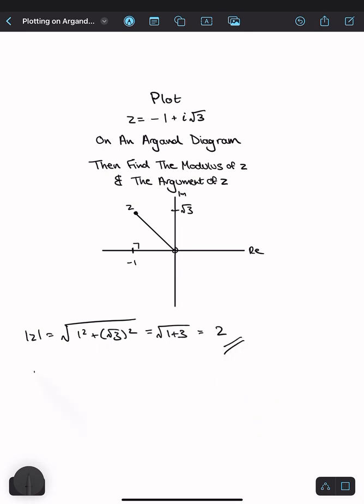Now let's find the argument of z. The argument is the angle made between the positive real axis and the line that joins the origin to that point. So this angle would be the argument, theta.